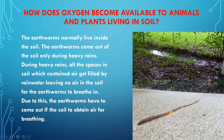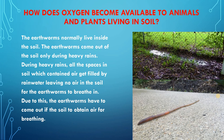Now earthworms — these all are earthworms. The earthworm normally lives inside the soil. These earthworms come out of the soil only during heavy rains. Generally during the rainy season, you will find more and more earthworms present here and there. What happens is they come out from inside the soil during heavy rains because all the spaces in soil which contain air get filled by rainwater, leaving no air in the soil for earthworms to breathe in. So the earthworms have to come out of the soil to obtain air for breathing.